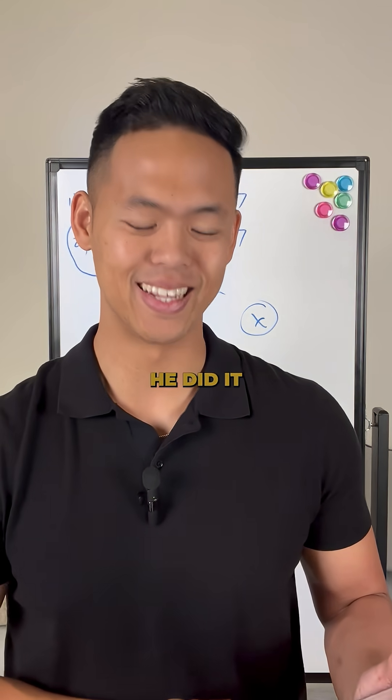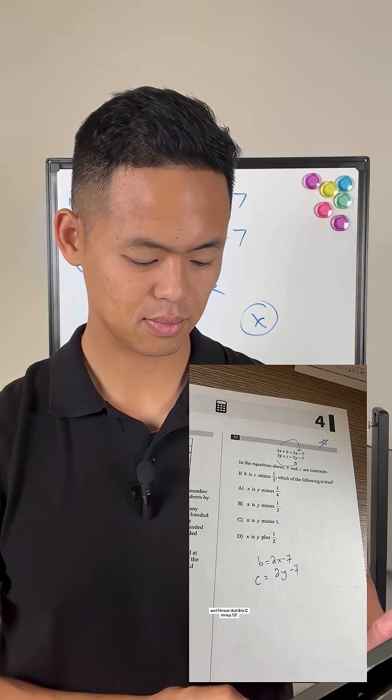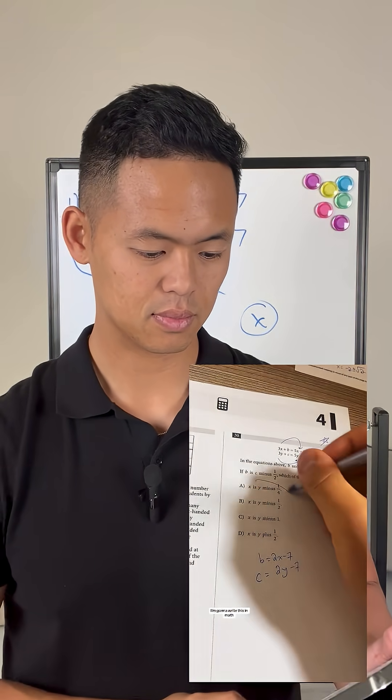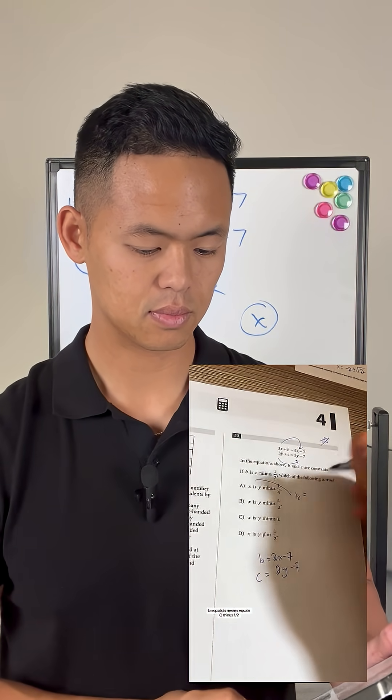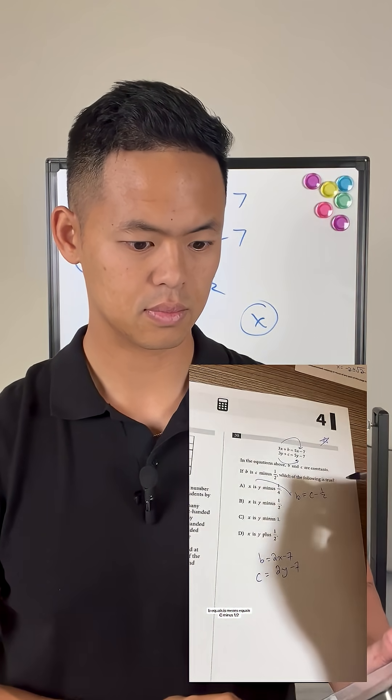There's a much easier way than how he did it. Well, I know that b is c minus one half. I'm going to write this in math. b equals, is means equals, c minus one half.